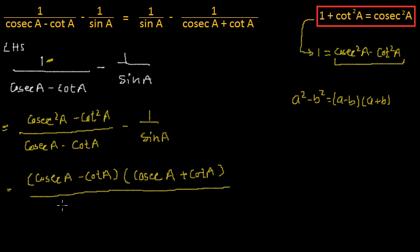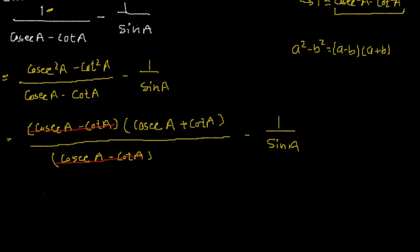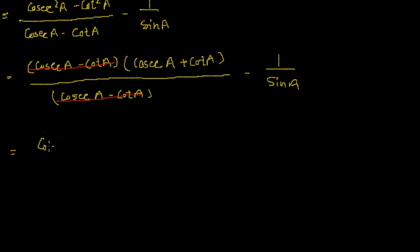So we have cosecA minus cotA, multiplied by cosecA plus cotA, all divided by cosecA minus cotA, minus 1 by sinA. This cosecA minus cotA in the numerator will cancel with cosecA minus cotA in the denominator, and this will be equal to cosecA plus cotA.